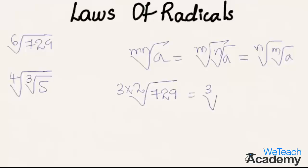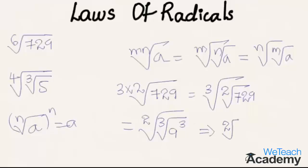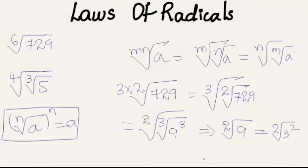This equals the cube root of the square root of 729, which is the cube root of 9 cubed. Using the law that the nth root of a to the power n equals a, the cube root of 9 cubed equals 9. Then the square root of 9 equals the square root of 3 squared, and using the law again this equals 3. So the 6th root of 729 equals 3.